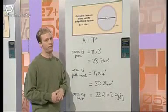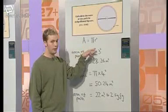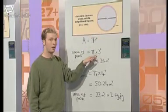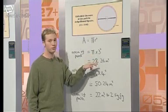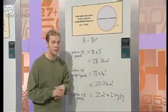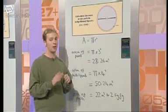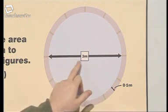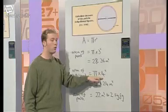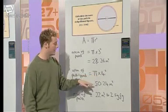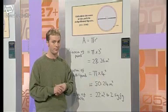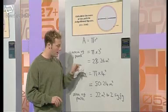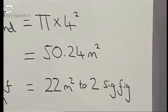I started by finding the area of the pond using A equals pi r squared. The radius is three metres. Three squared multiplied by 3.14 is 28.26 metres squared. To work out the area of the path and the pond, I used the same formula, but a path of width 0.5 metres on either side means the total radius is now four metres. Four squared multiplied by 3.14 is 50.24 metres squared. Subtracting the pond area gives 22 metres squared to two significant figures.